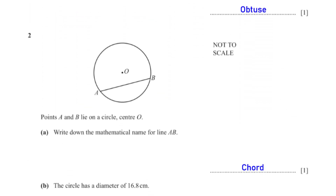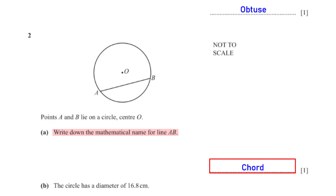Points A and B lie on a circle with center O. Write down the mathematical name for line AB. AB is a chord. A chord is simply any line that connects any two points on the circumference of a circle.